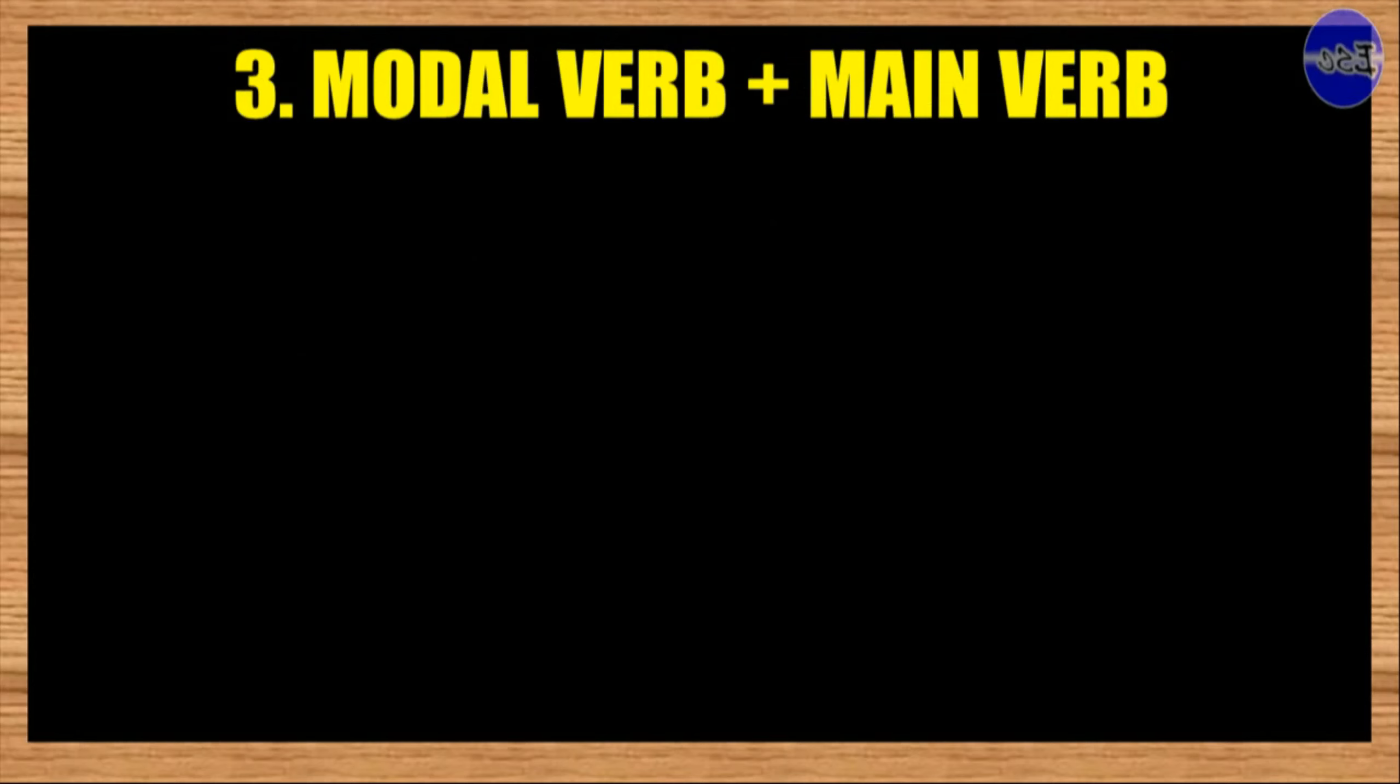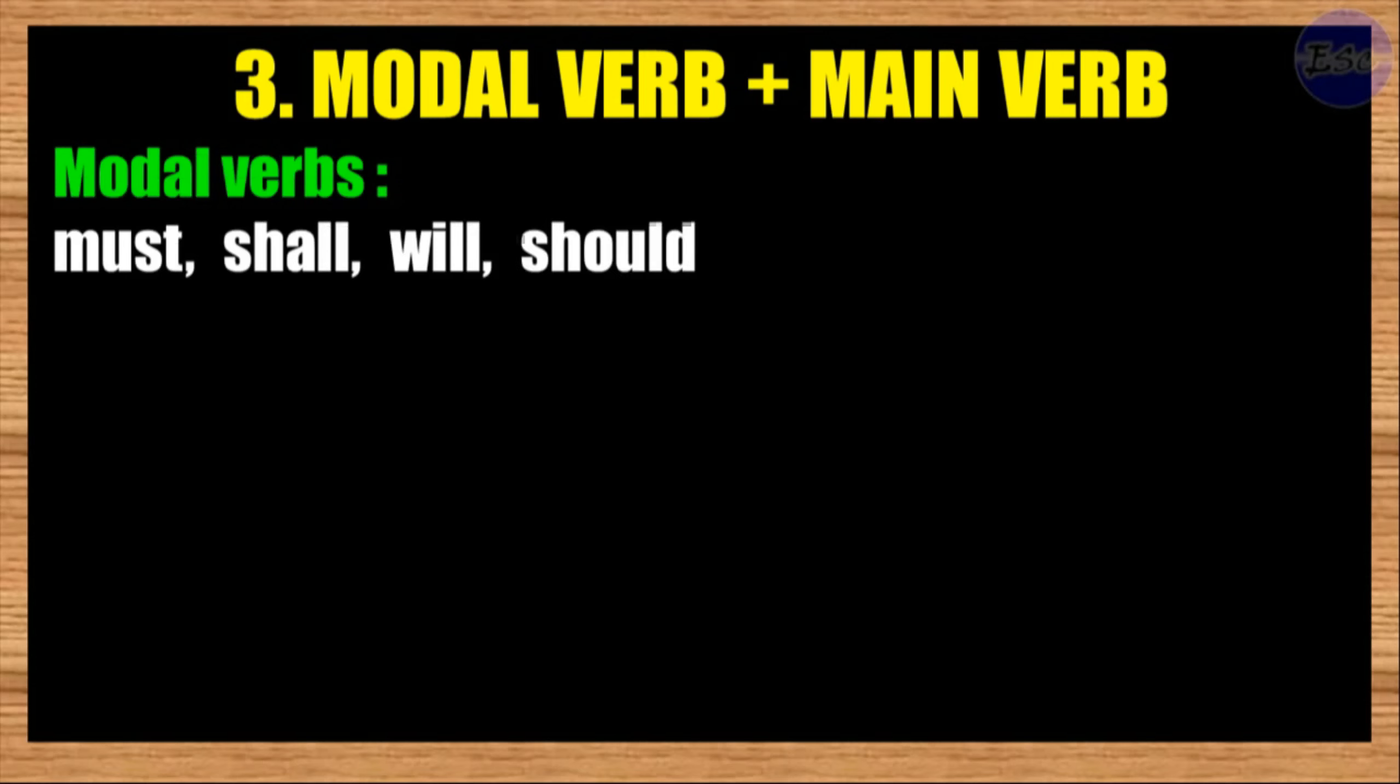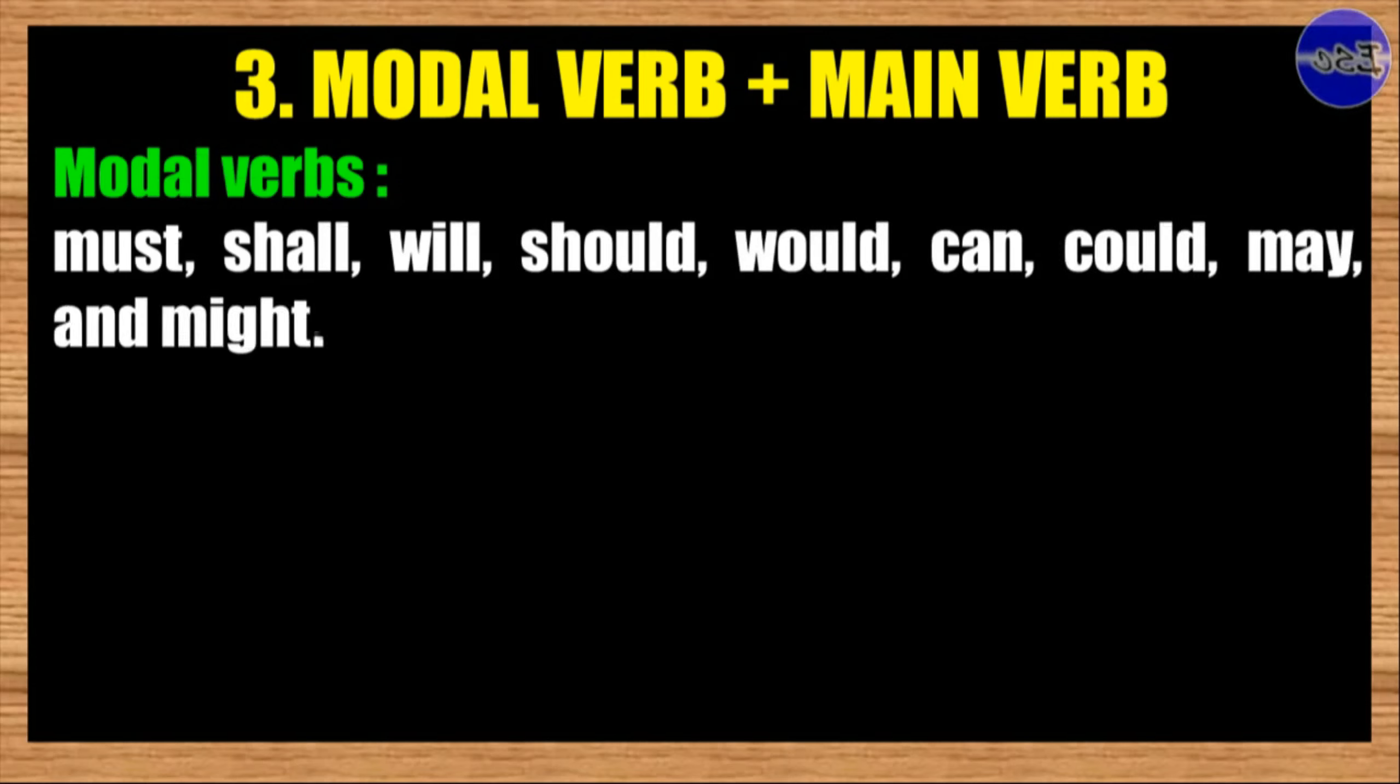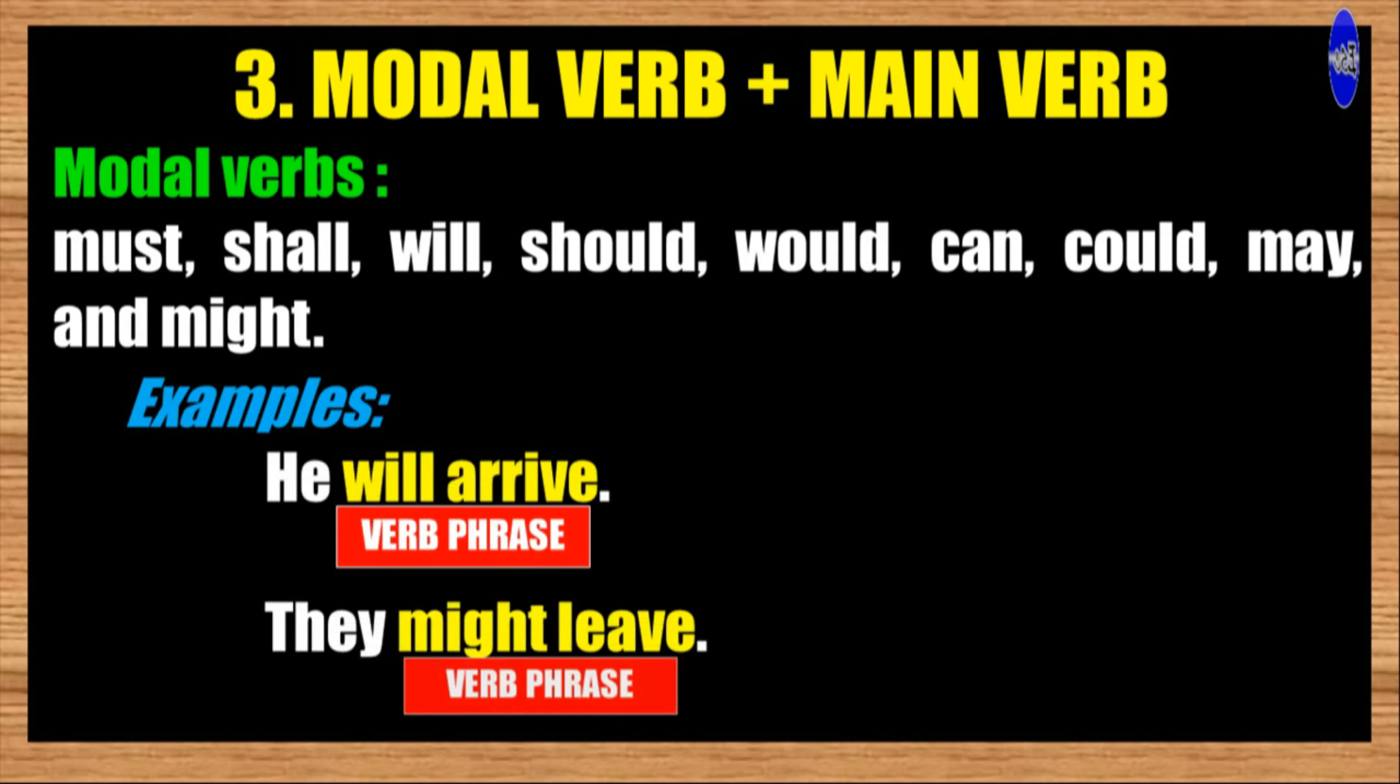3. Modal verb plus main verb. Modal verbs are a type of auxiliary verb that express modality. Modality includes things such as possibility, probability, ability, permission, and obligation. Example modal verbs include must, shall, will, should, would, can, could, may, and might. Examples: He will arrive. They might leave.